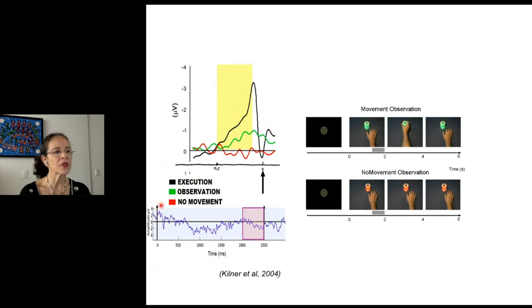Results can be appreciated in this graph on the left. A big readiness potential is identified in black for the execution condition. So this is the activity preceding the movement execution.